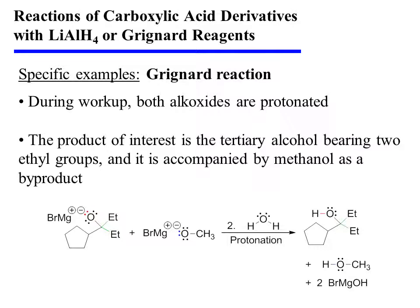During workup, both of the alkoxides are protonated. The product of interest is the tertiary alcohol bearing two identical ethyl groups, which were added during the course of the reaction. This product of interest is accompanied by methanol as a byproduct.